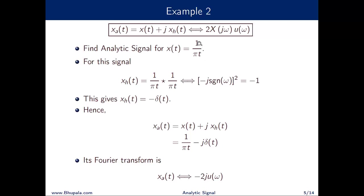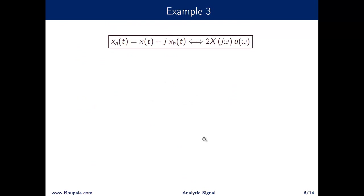To verify: the Fourier transform of 1/πt is −j·sgn(ω). Plugging in gives −2j·sgn(ω)·u(ω). Since sgn(ω)·u(ω) = u(ω), the result is −2j·u(ω), confirming the answer.